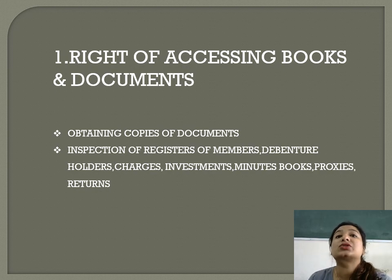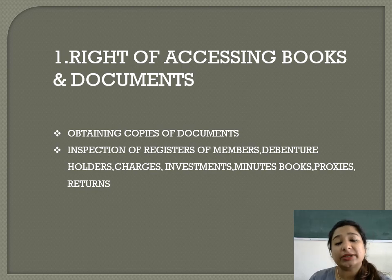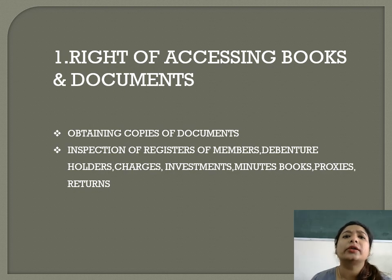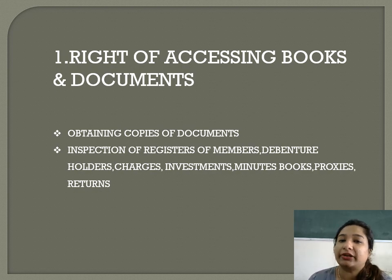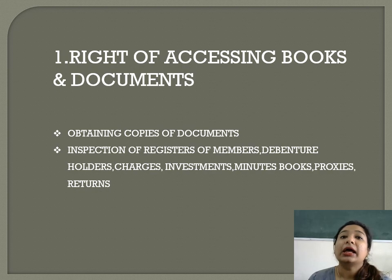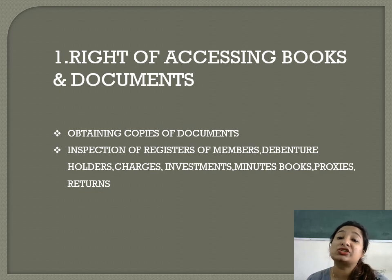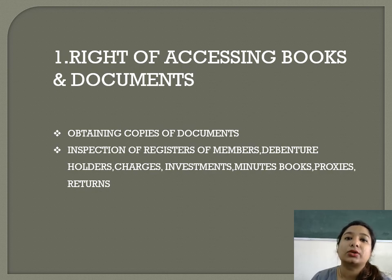Articles of association can have multiple copies distributed to HODs, managers, or important people so that employees can refer to it while working. However, articles of association is only for internal people of the company — employees and management. Memorandum of association, on the other hand, can be referred to by outside people as well, and members are also allowed to see it.